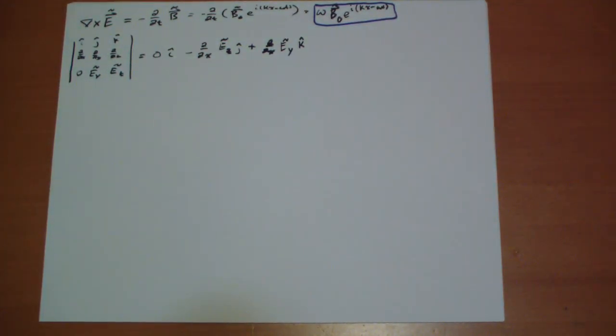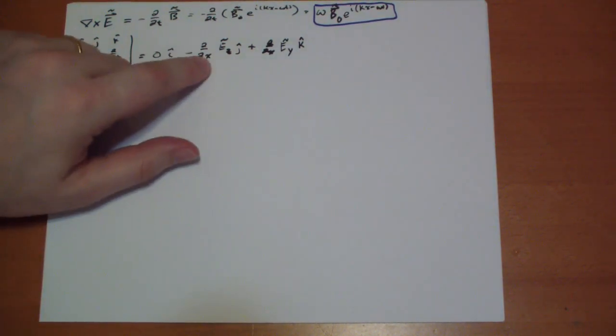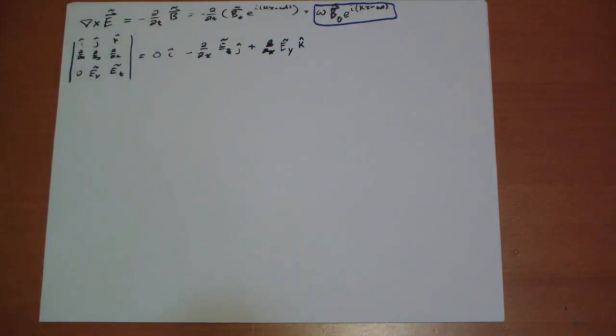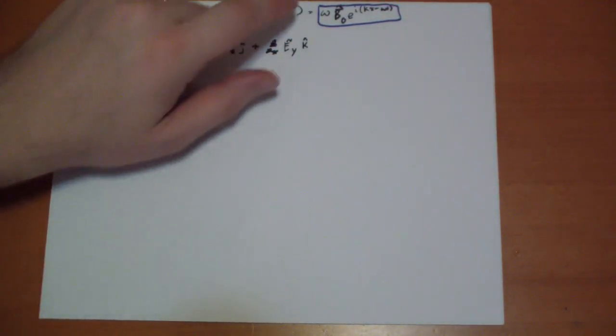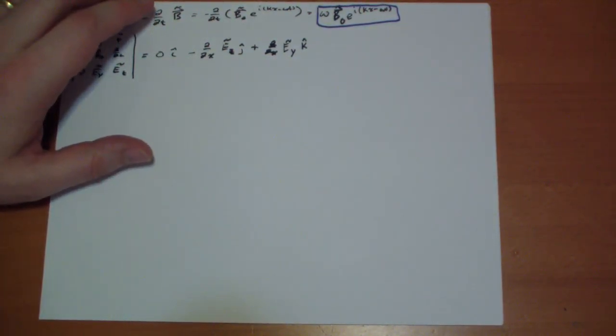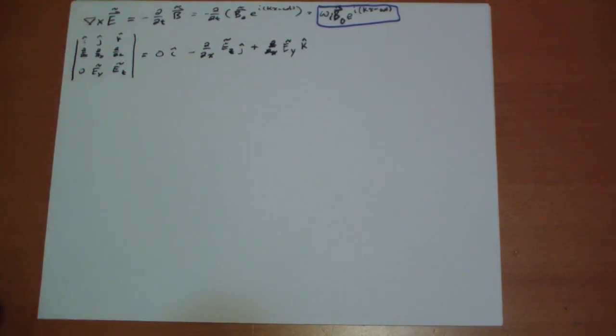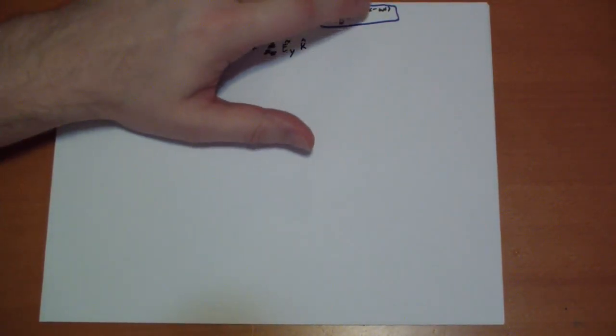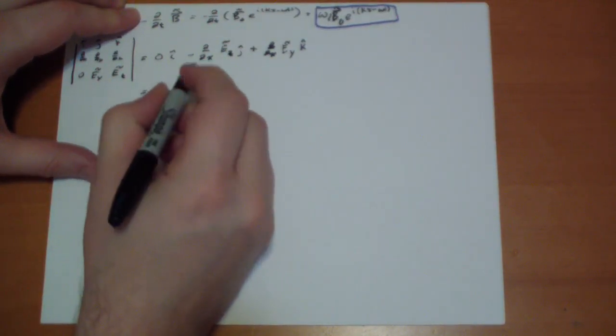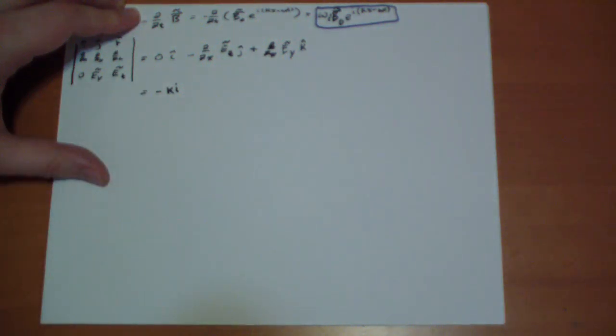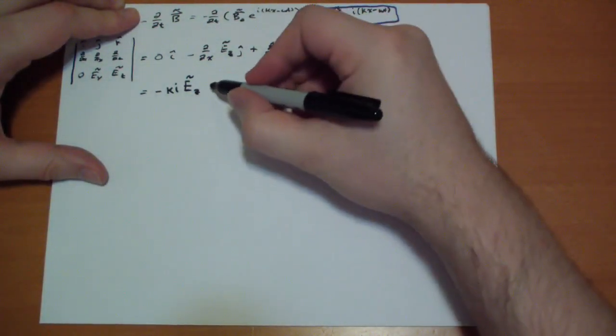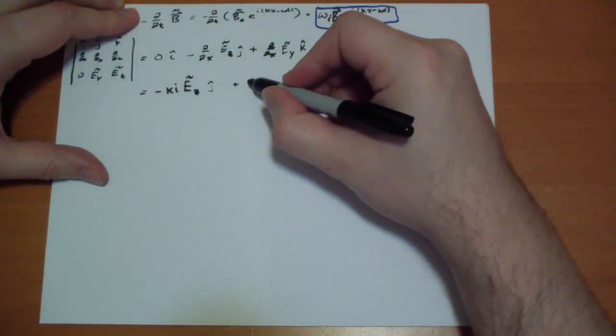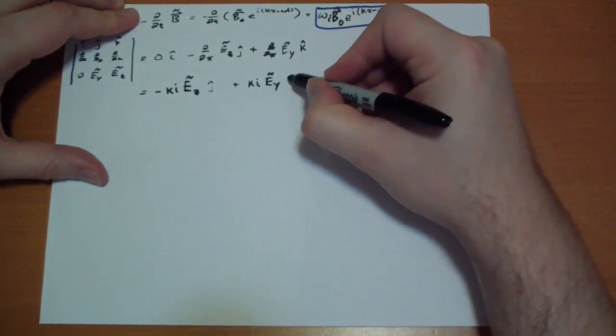Taking the derivative with respect to X of our fields is rather easy, once again. Our fields are just something E to the i KX. So we're going to bring down an i, we're going to bring down a kappa. This is going to be equal to minus kappa i times the same field in the j hat direction, plus kappa i of the same field in the k hat direction.